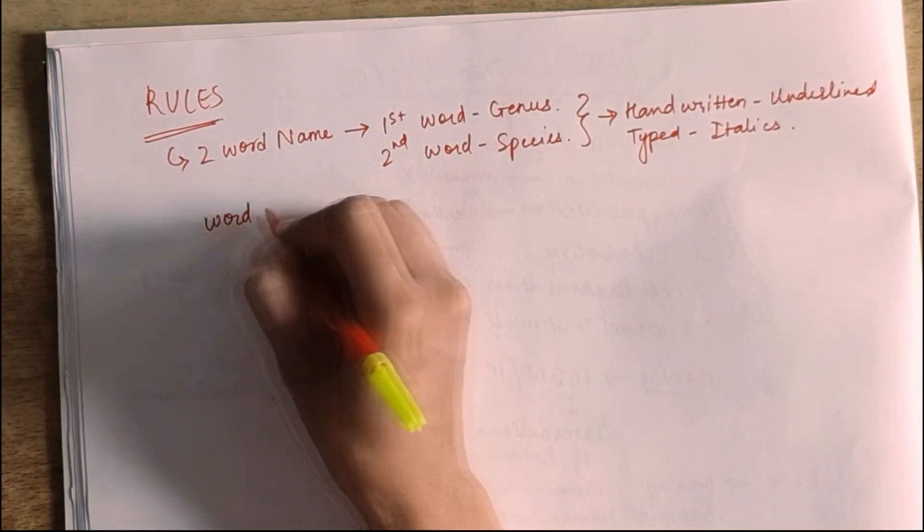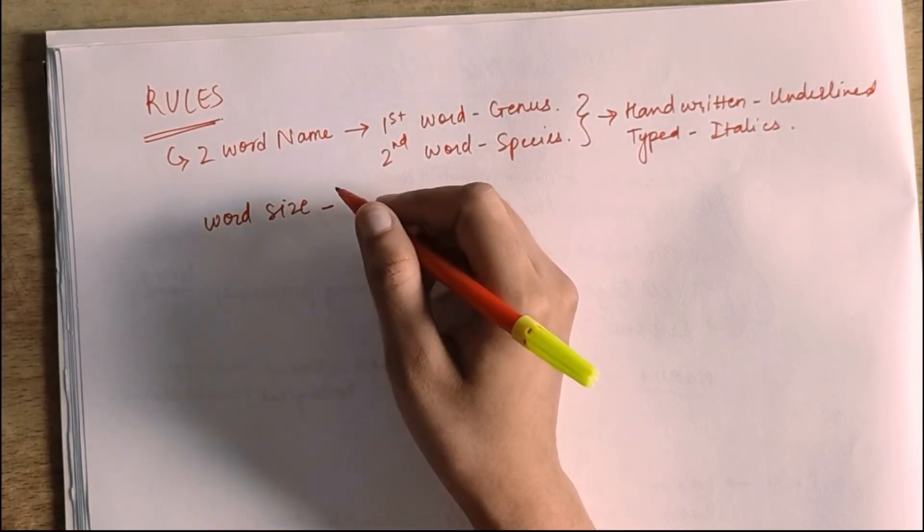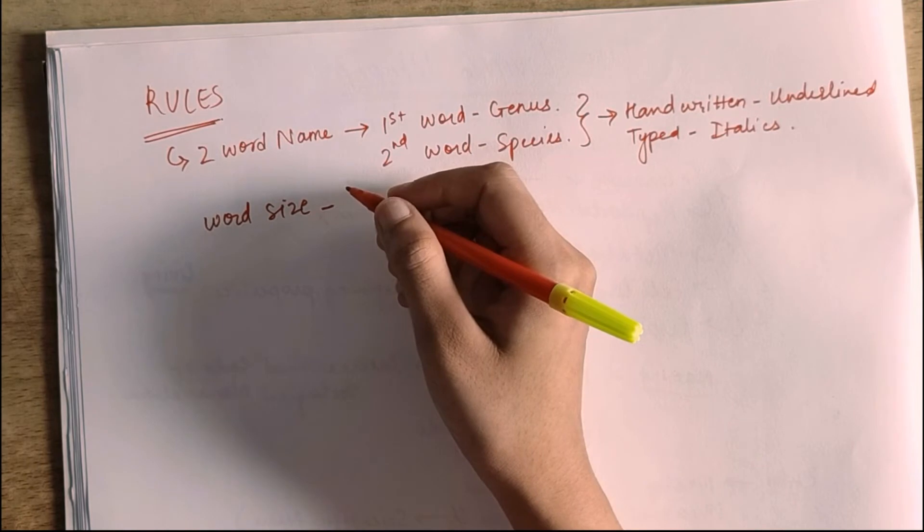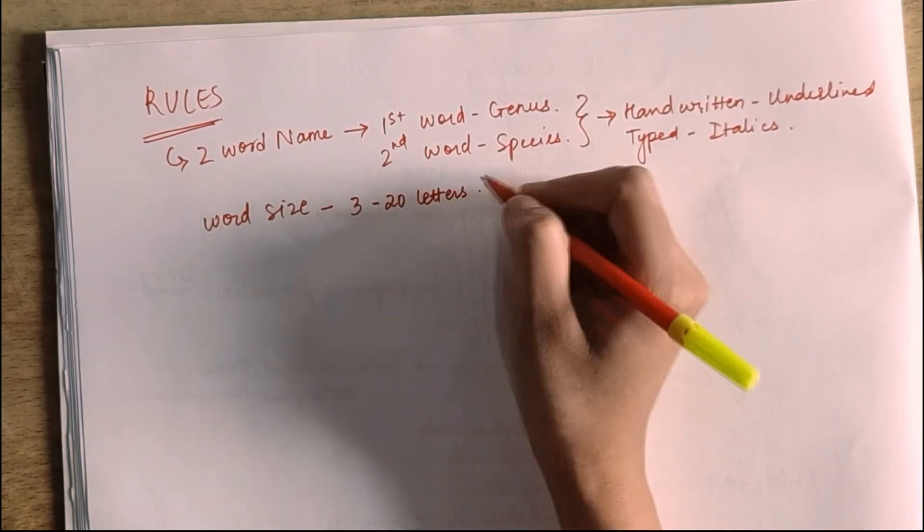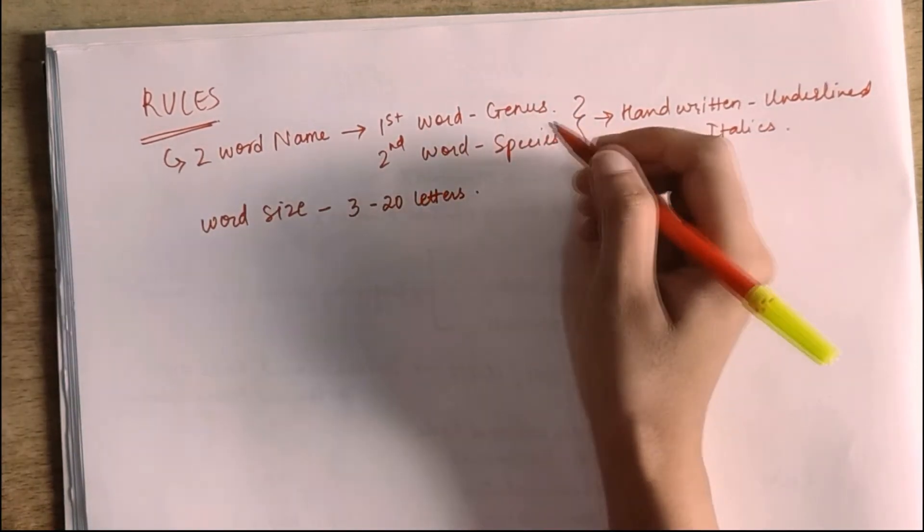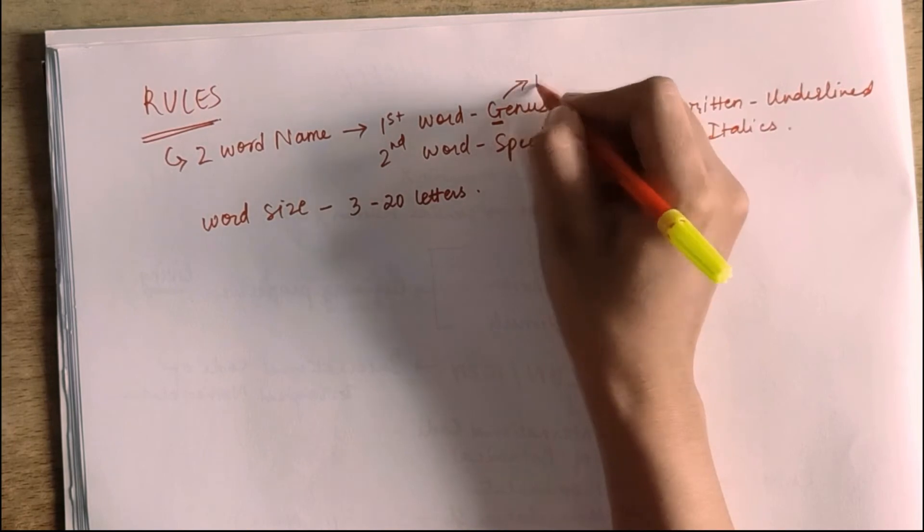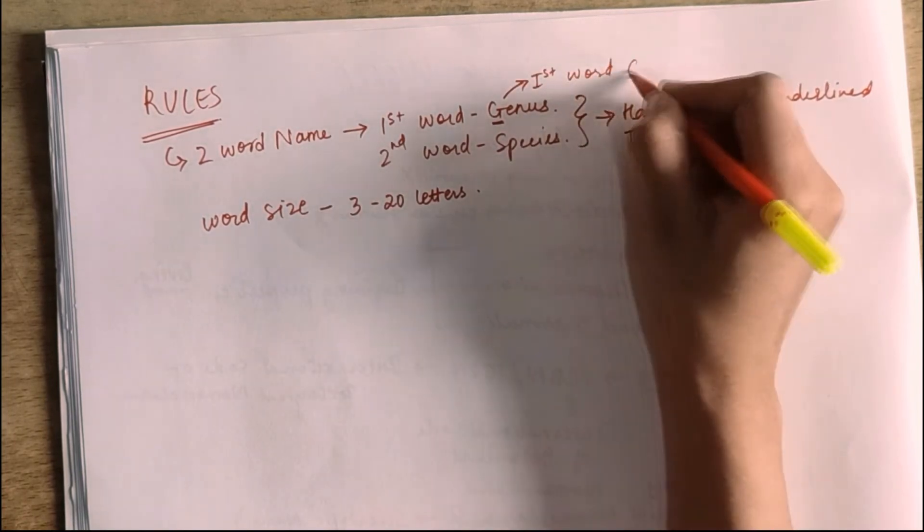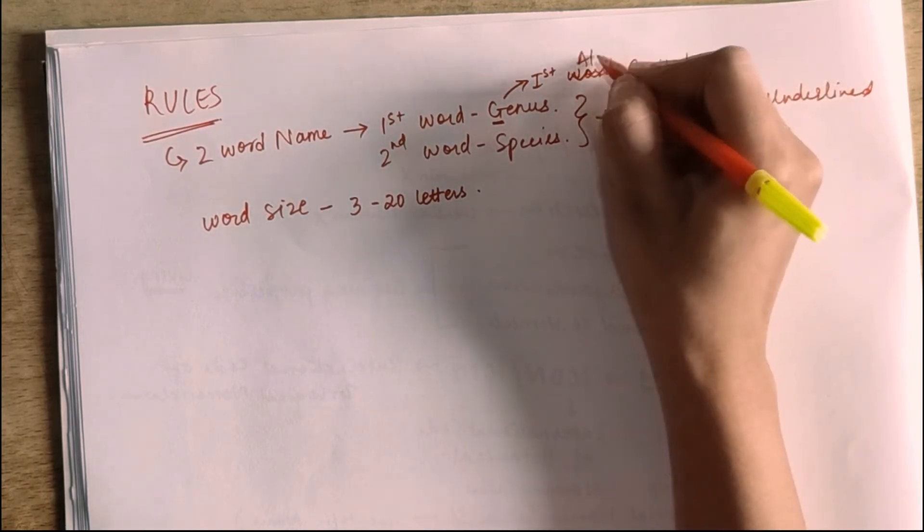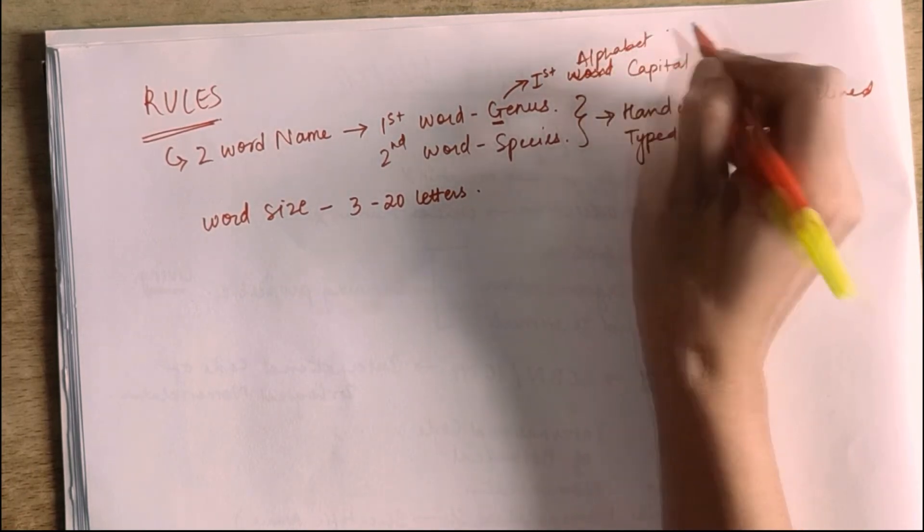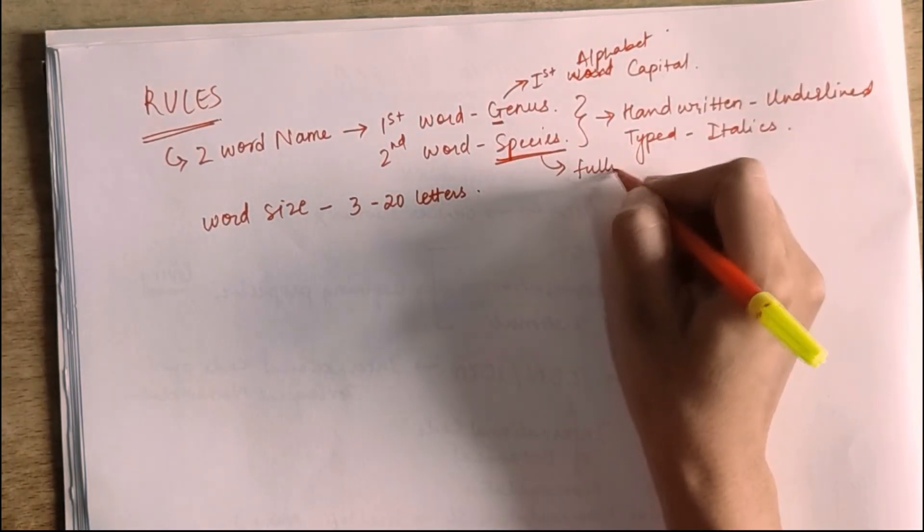They will be given the size of every word. Whatever the name of binomial nomenclature or the name of the organism, the size of 3 to 20 letters should be used. The name of the genus is the first word. The first word should be capital, the first alphabet capital.